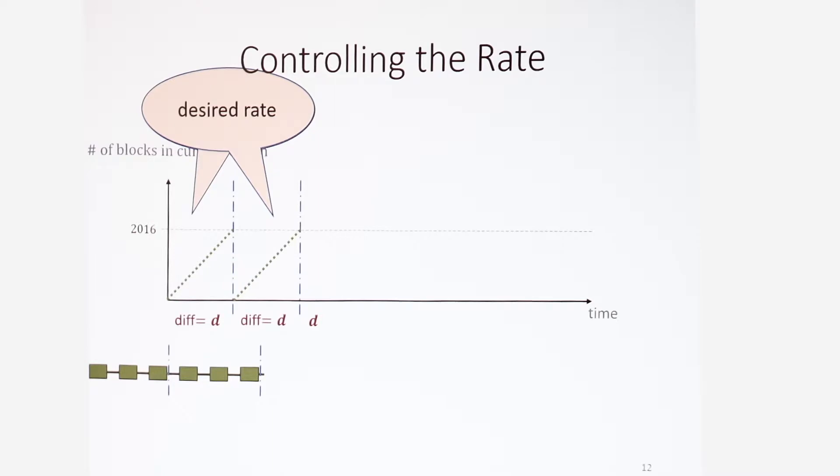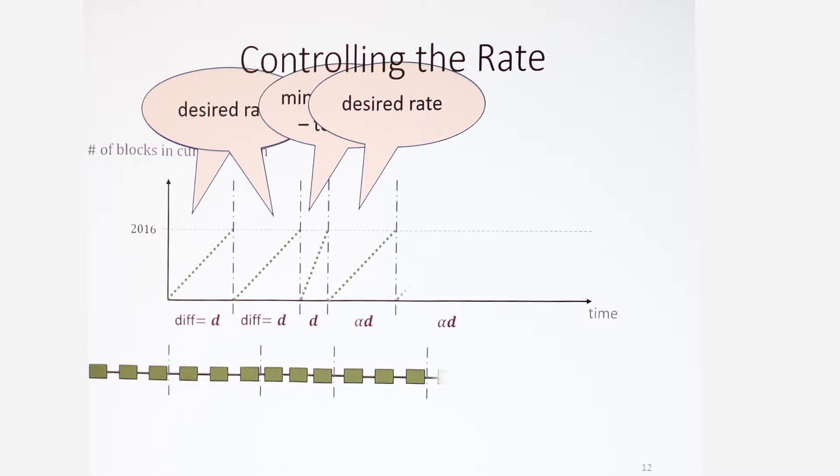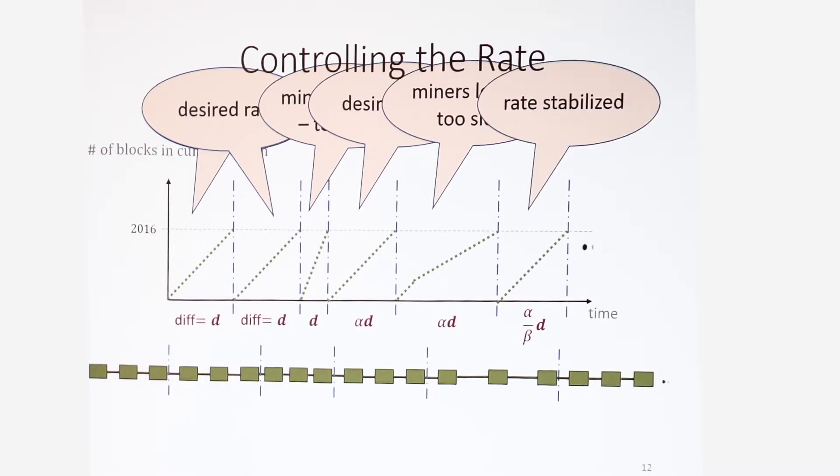But now let's assume that some miners joined. Well, that was fast. That was too fast for the coin. So what does the coin do now? Makes the difficulty harder. Once the difficulty is harder, the rate decreases back to the normal rate that we want. Everything is good. Once that epoch ends, we can set the difficulty again and since the rate is just as we desire, it stays the same. But now miners decided to leave, and the epoch takes very long to complete. So the coin sees that the rate is too slow. It has to update the difficulty. So it reduces it appropriately. And again, we have the desired rate and so on and so forth. Everything good and simple.